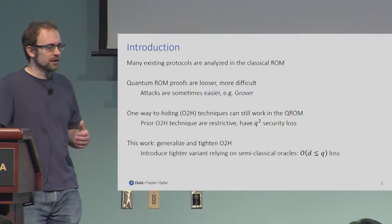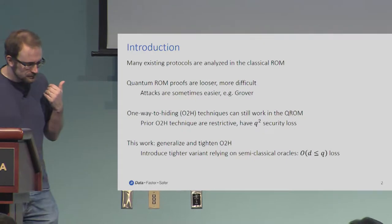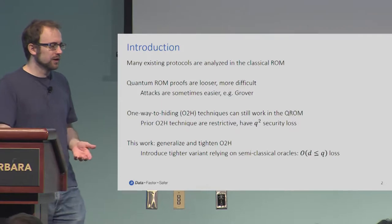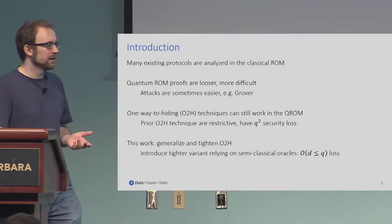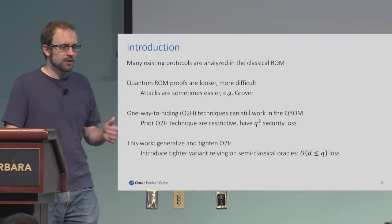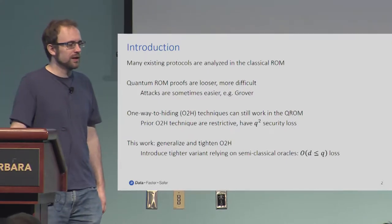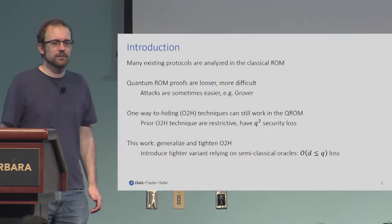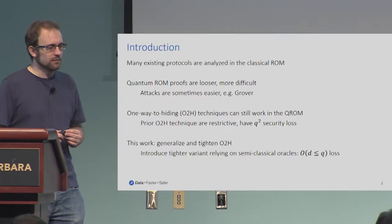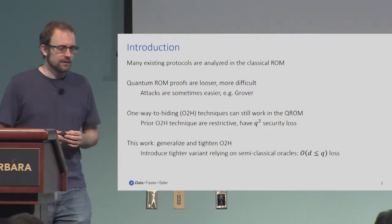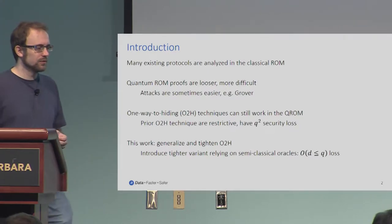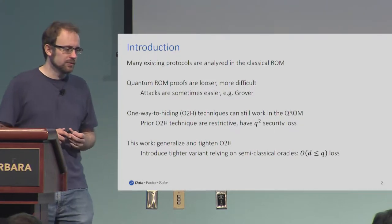You heard in the last talk how to do this for recording the adversary's queries and responding adaptively, but there are still a large number of caveats on that, and it requires quite a lot of expertise to wield. So a simpler but weaker technique is this one-way-to-hiding technique that still works in the Q-ROM. We're trying to make it easier to use, apply to more cases, and have at least in some cases a lower security loss. The original work comes from Unruh, one of the authors on this paper, in 2015.